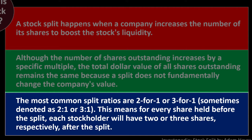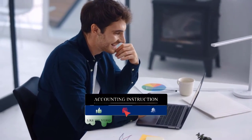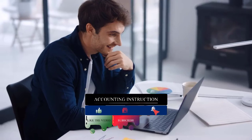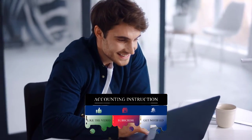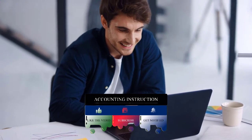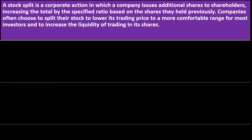The most common split ratios are two-for-one or three-for-one, sometimes denoted as 2:1 or 3:1. This means for every share held before the split, each stockholder will have two or three shares respectively after the split. For example, if you held five stocks and it was a two-for-one split, you would have ten stocks after the split.